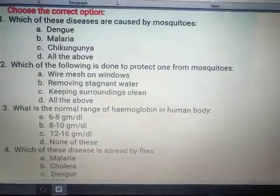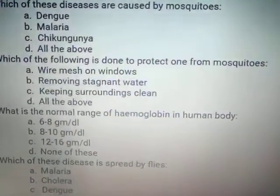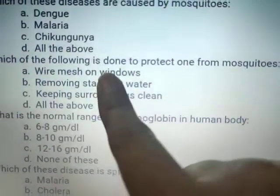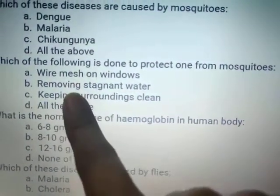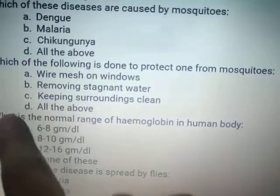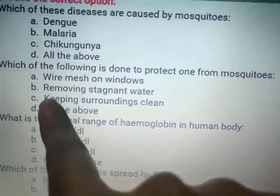Which of the following is done to protect one from mosquitoes? Wire mesh on windows, removing stagnant water, keeping surroundings clean, all of the above. You will tick 'all of the above.'